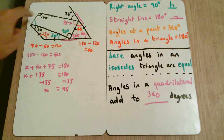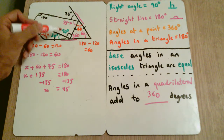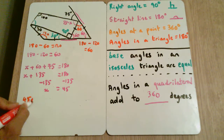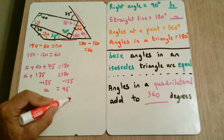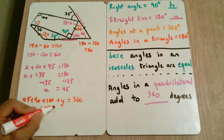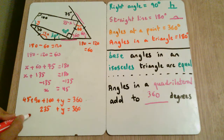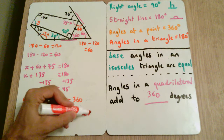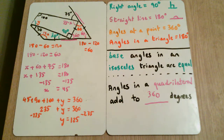We now have the missing angles in the quadrilateral and just need this final one, which is the actual value we need. Angles in a quadrilateral add to 360, so 45 plus 90 plus 100 plus y equals 360. Adding 45, 90, and 100 gives 235, so 235 plus y equals 360. Subtracting 235 from both sides gives y equal to 125 degrees. That's our final answer.